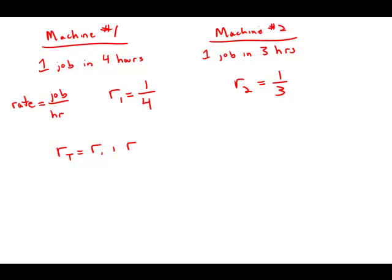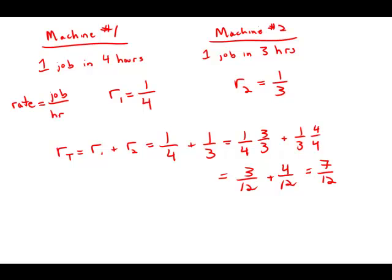One-quarter plus one-third. We find a common denominator, multiplying the first one by three over three, the second one by four over four. We get three-twelfths plus four-twelfths equals seven-twelfths. That is the combined rate.